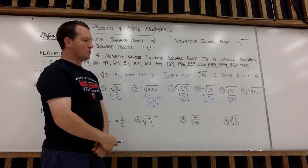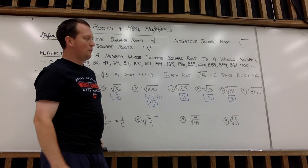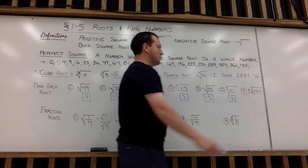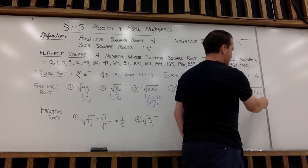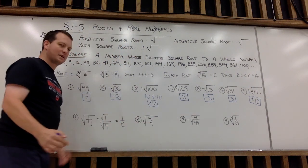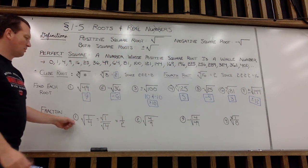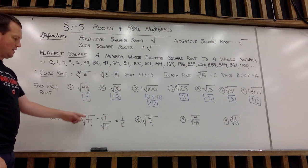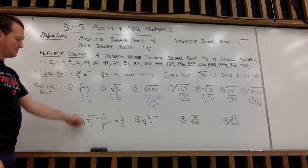Last example here before fractions, we have both the positive and negative square roots of 144. So I want to take both positive and negative 12. Alright, last four examples here.